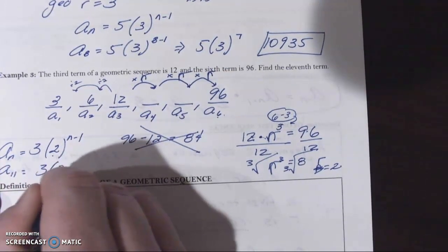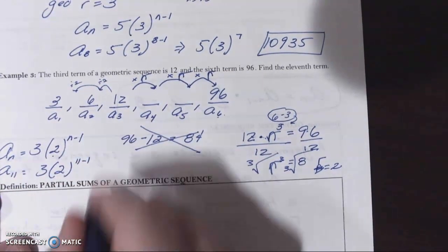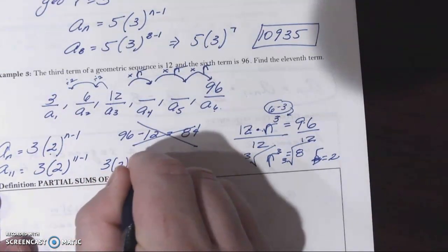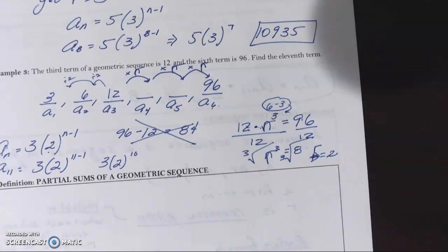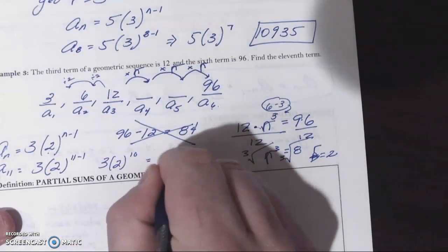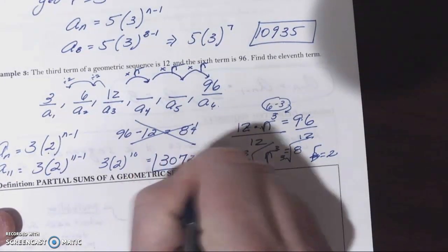If I wanted to find the 11th term, just plug in 11 for n. So I get three times two to the 10th. I'm not going to pretend to know what two to the 10th is off the top of my head. Could take a guess at it. But I'll use my calculator and the 11th term would be 3072.